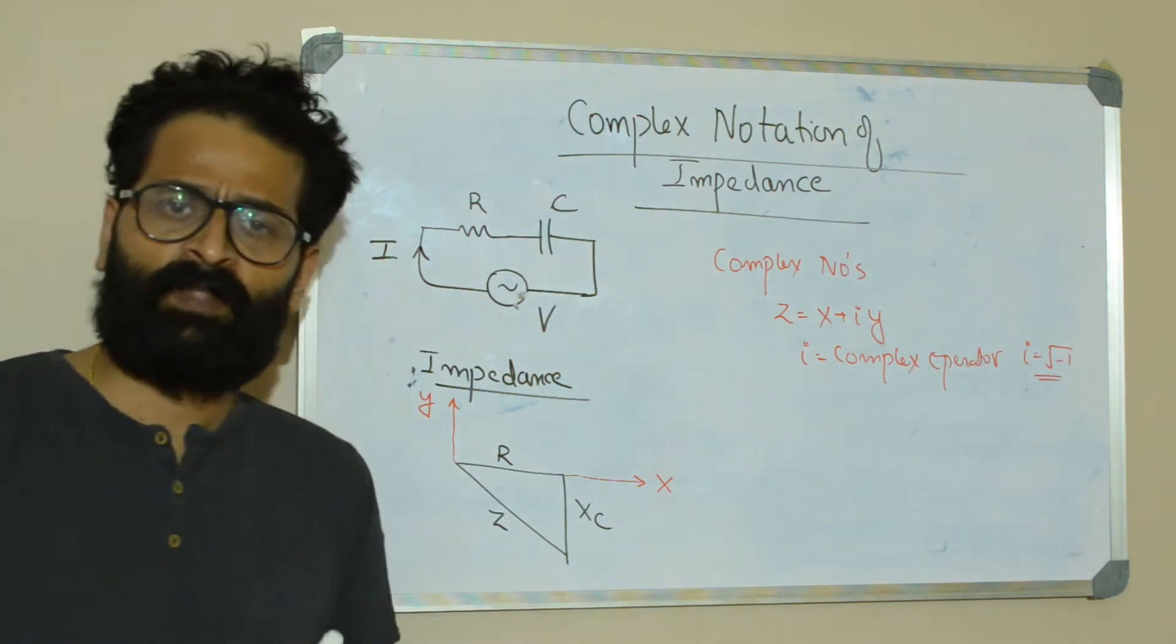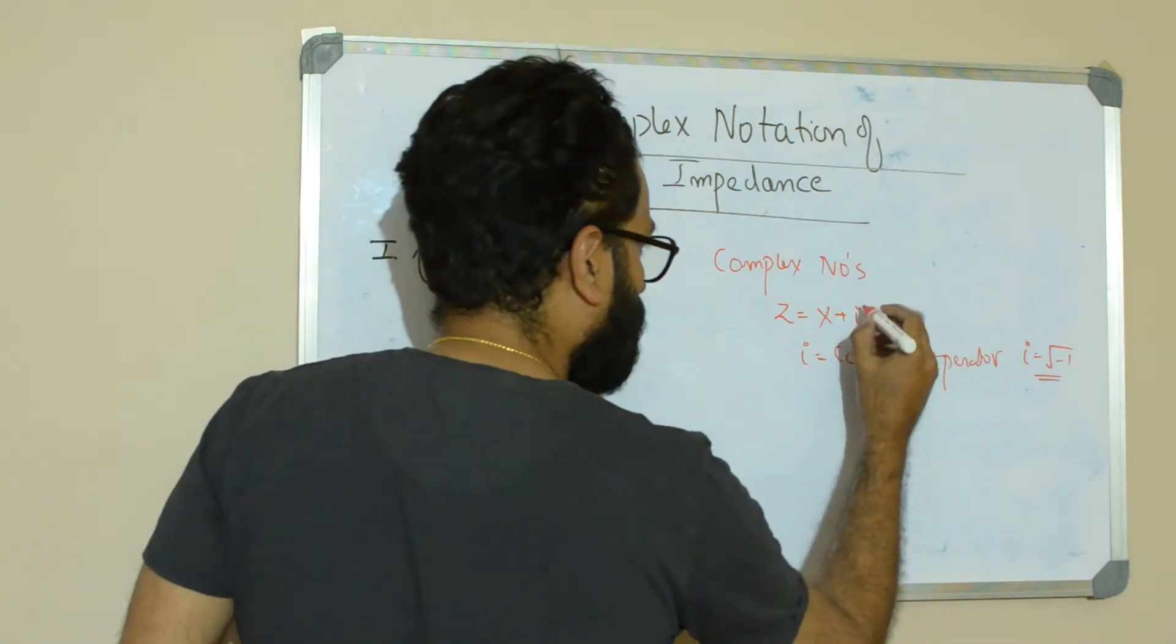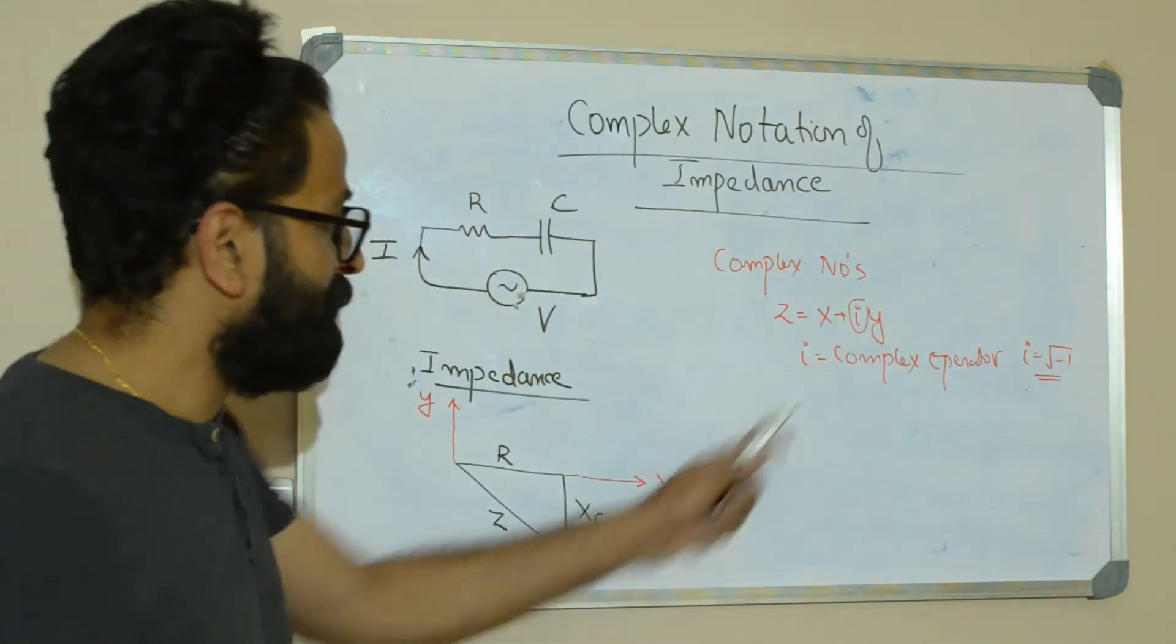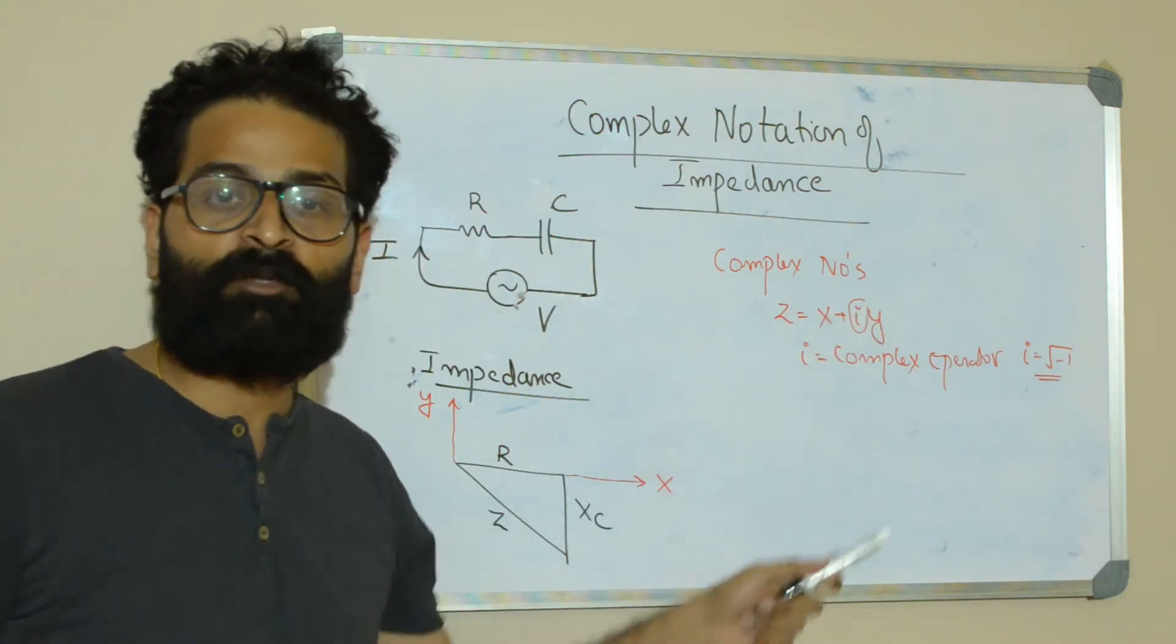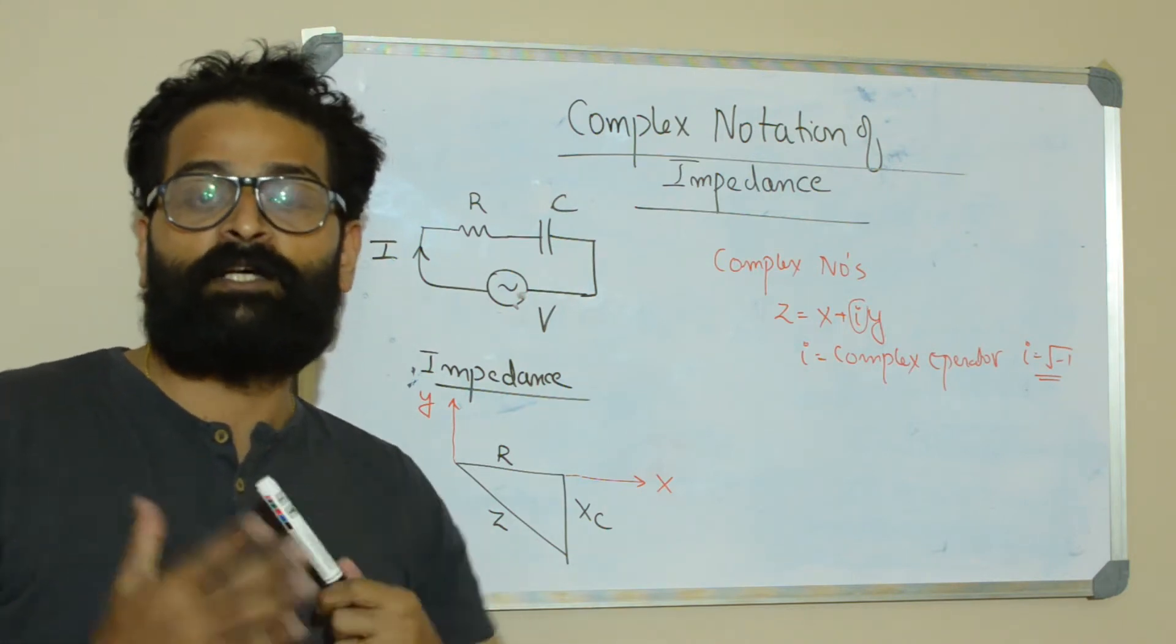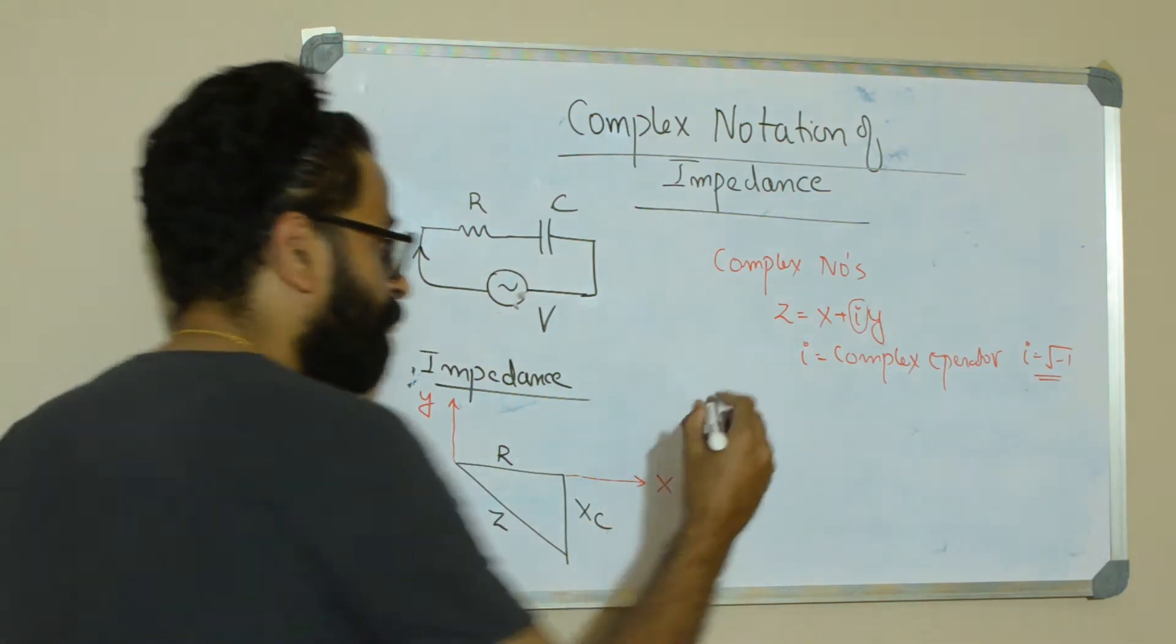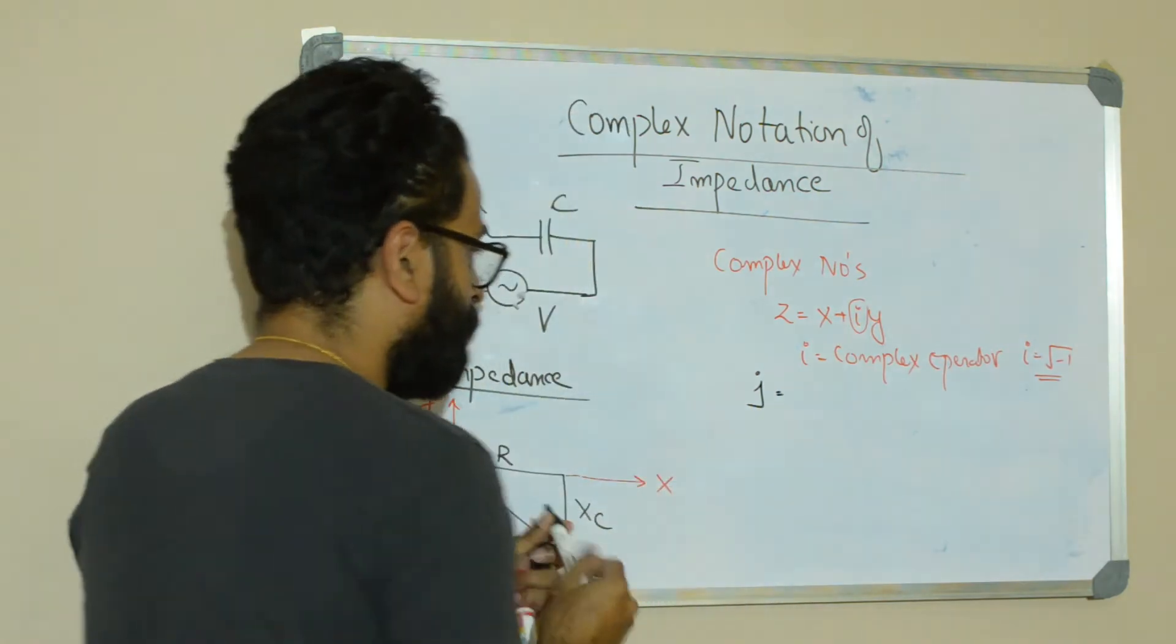But in electrical engineering we will not be considering the complex operator as I, because this small I in electrical engineering we have used to represent instantaneous current. That's the reason you will not find any impedance description in terms of I.